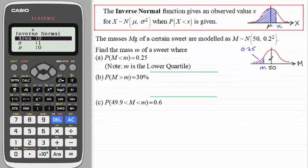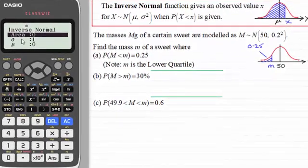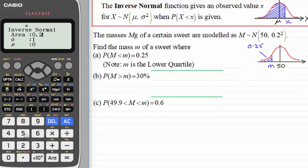Anyway, so we've got to calculate m. And all we need to do is, in this mode, we put the area, which is set at the moment at 0, as 0.25. So we'll put in there 0.25. Press equals to enter it. Now we have the standard deviation, which at the moment is set at 1, but the standard deviation for this question is 0.2. So put in there 0.2, enter it by pressing equals. And now it's asking for the mean, mu, and the mean is 50. So just put 50 in, press equals to enter that.